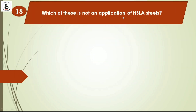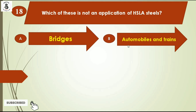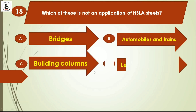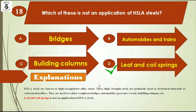Which of these is not an application of HSLA steels? Option A Bridges, option B Automobile and Trains, option C Building Columns, option D Leaf and Coil Springs. HSLA, or High Strength Low Alloy steels, are primarily used as structural materials. They are used to reduce weight in bridges, automobiles, pressure vessels, and building columns. Leaf and coil springs are not an application of HSLA steels. So the right answer is option D, Leaf and Coil Springs.